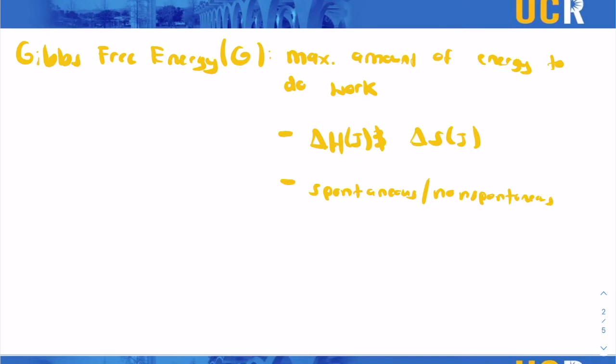And you can tell that by the sign. So if delta G, the change in G, if the value is ever negative, that means it is always spontaneous.